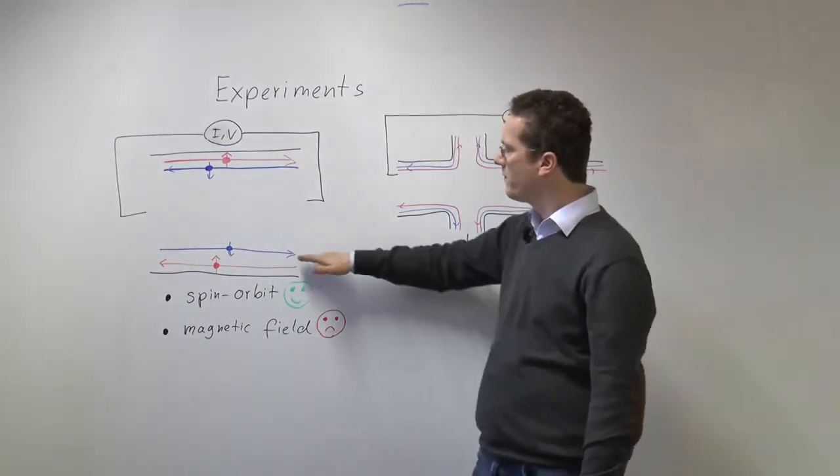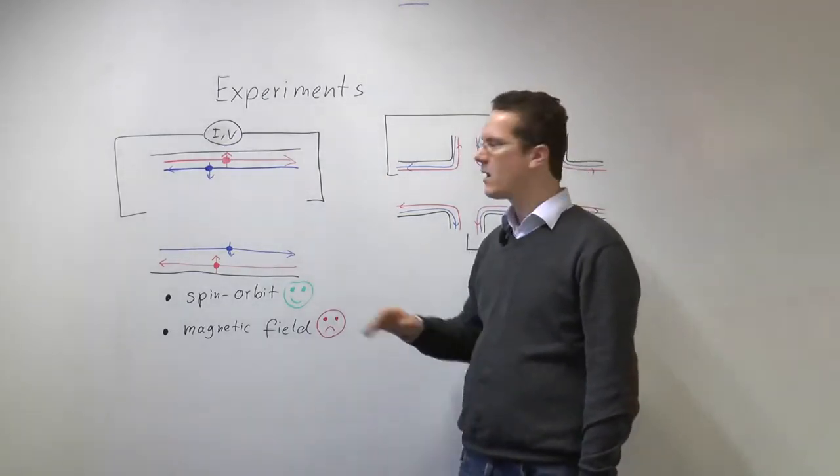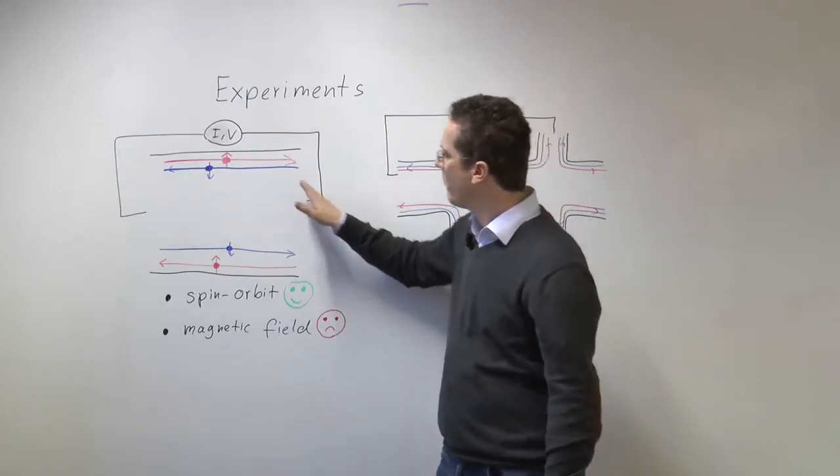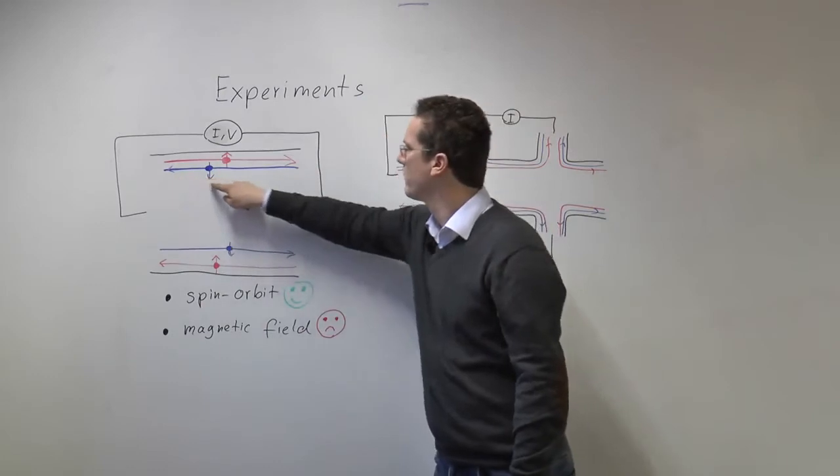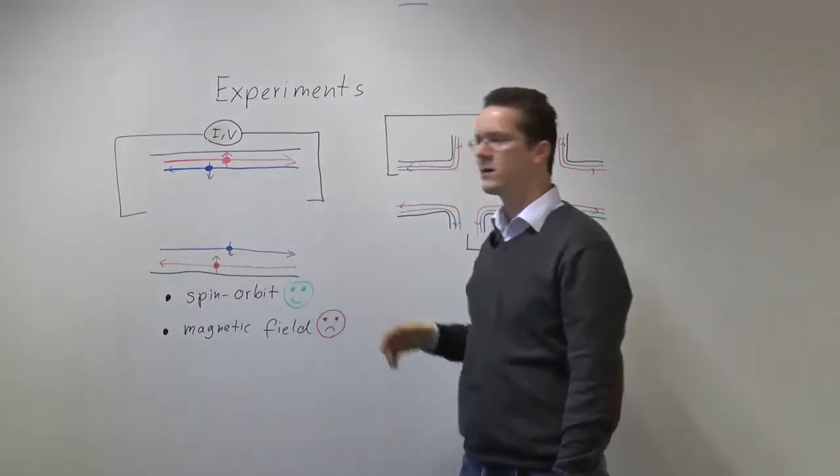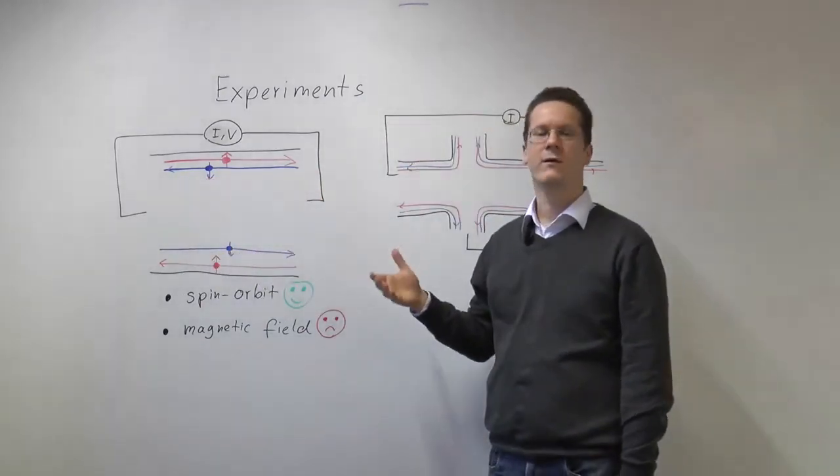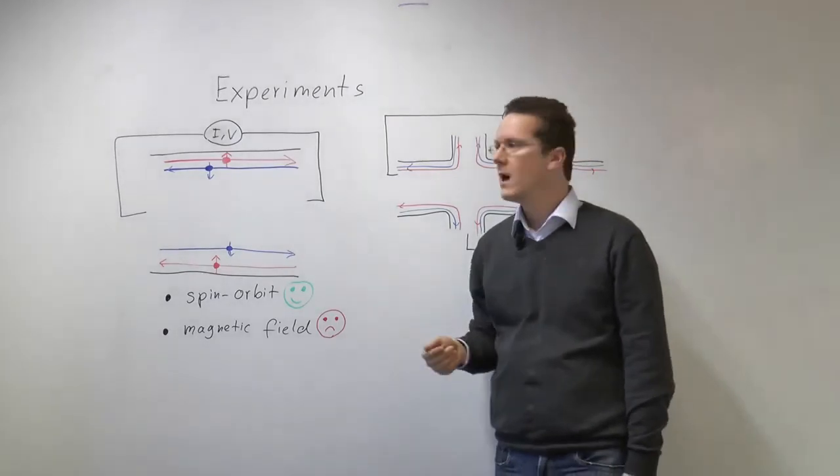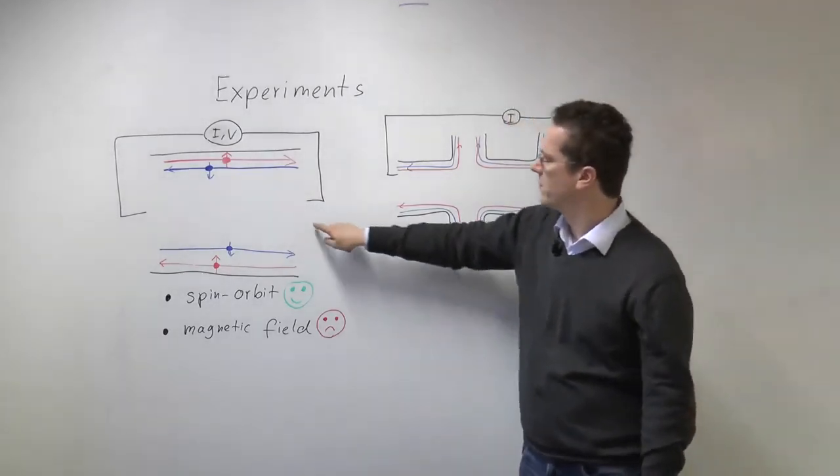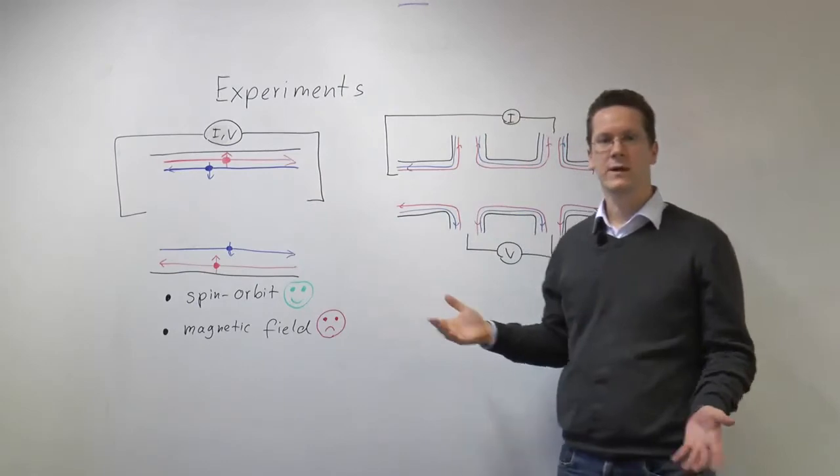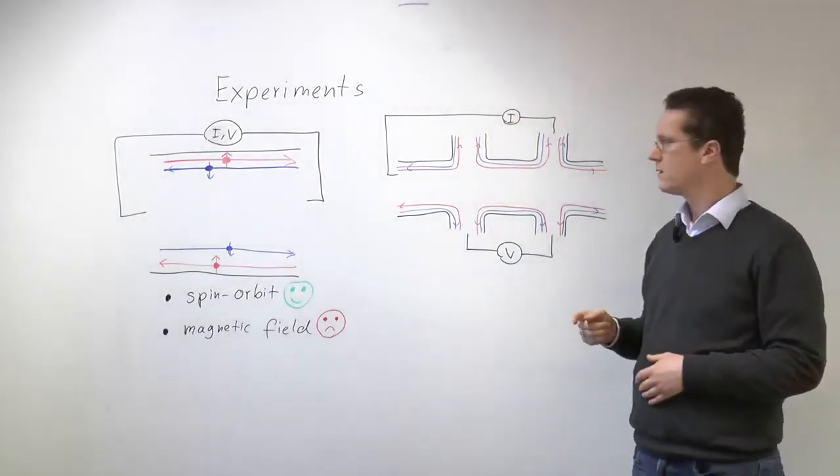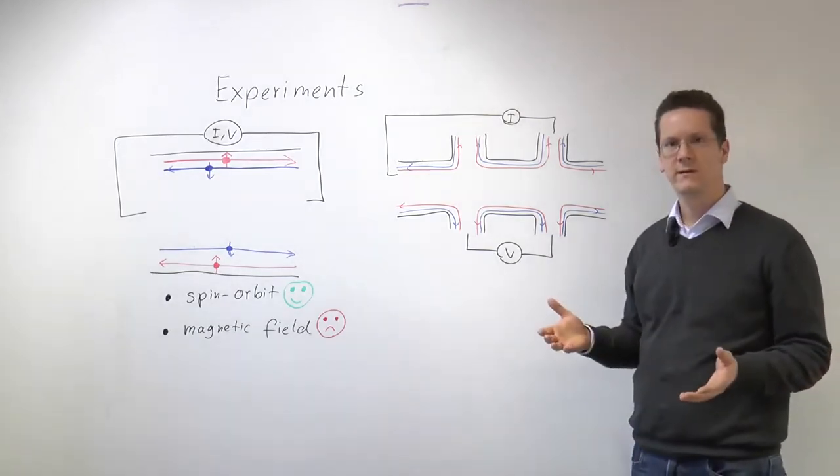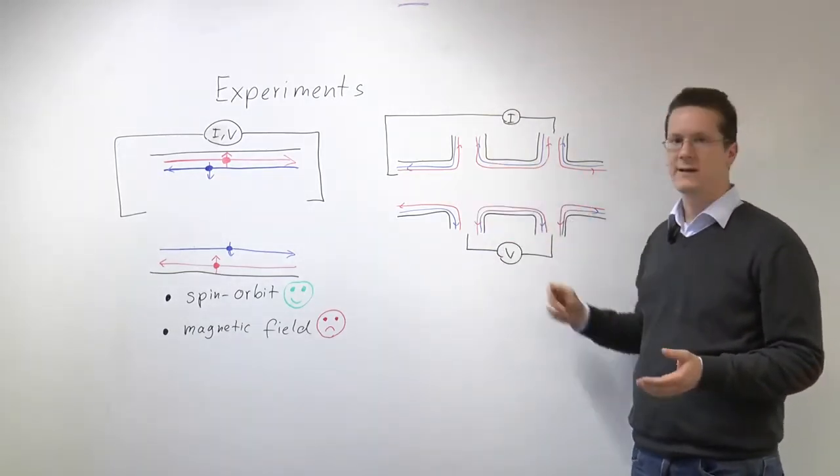And we can now probe these edge states by passing a current through them. So if you apply a voltage here to these two sides of the sample then a current will flow through these edge states and this will give rise to a characteristic value of the resistance. However you do not need to restrict yourself to such a two-terminal setup. You can also go more crazy.